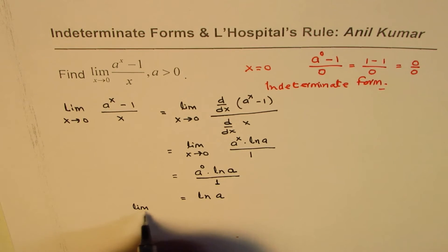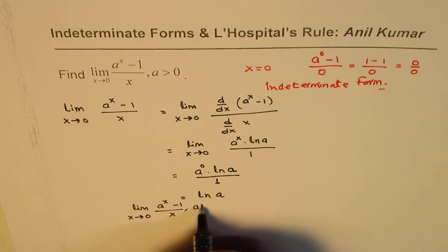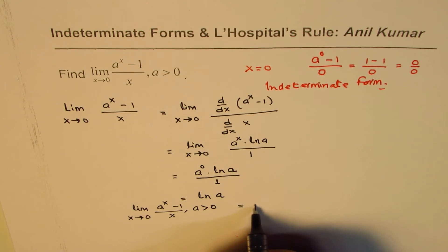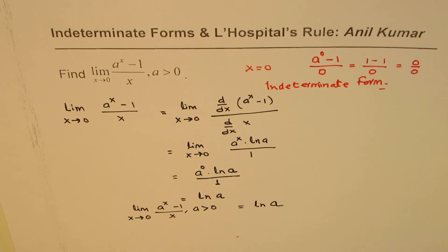Therefore the answer is ln a. So the limit as x approaches 0 for a to the power of x minus 1 over x, where a is greater than 0, equals ln a.